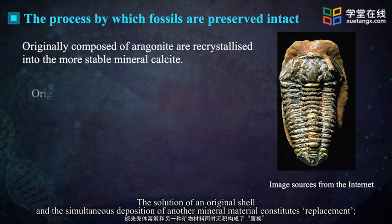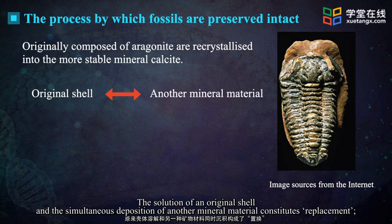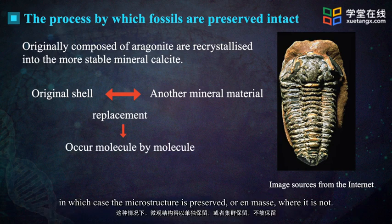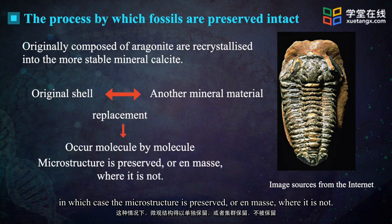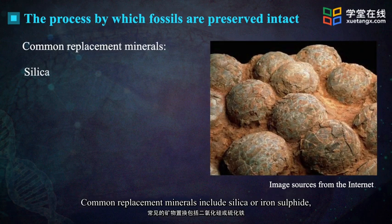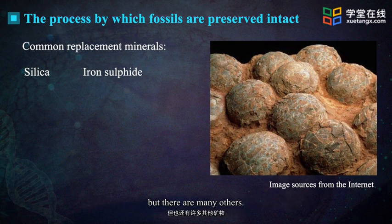The solution of an original shell and the simultaneous deposition of another mineral material constitutes replacement. This may occur molecule by molecule, in which case the microstructure is preserved; or en masse, where it is not. Common replacement minerals include silica and iron sulfide, but there are many others.